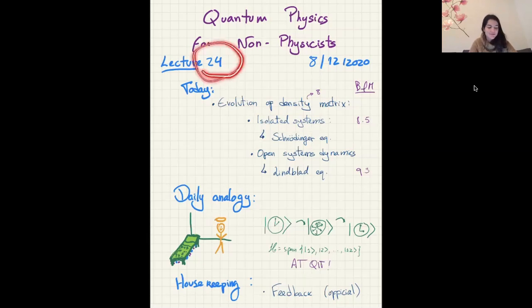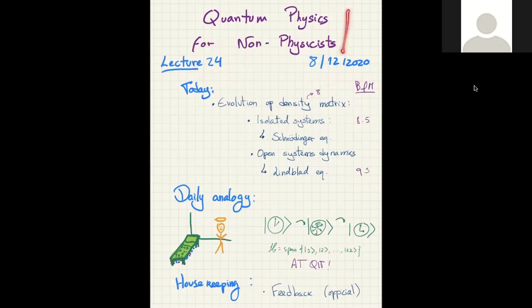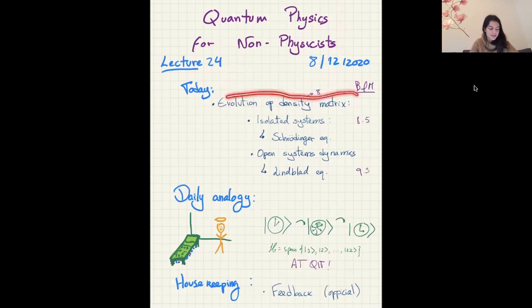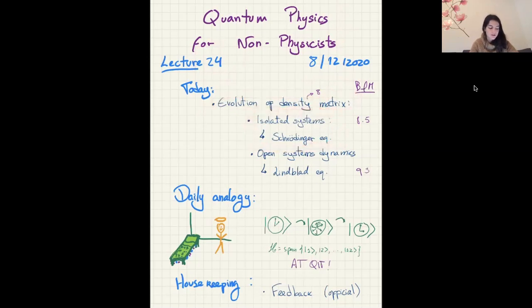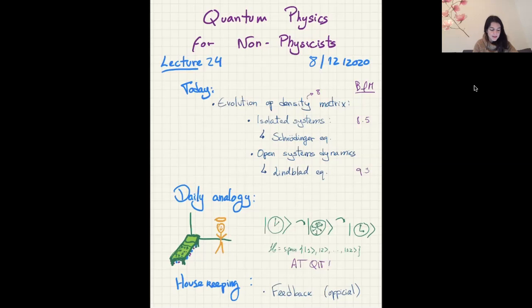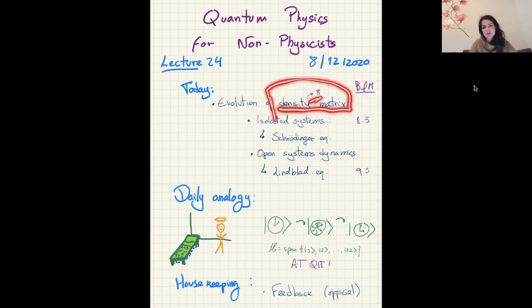Welcome to lecture 24, dated the 8th of December. Today we'll talk about the evolution of the density matrix, both in isolated systems—generalizing the Schrödinger equation for mixed states—and for open systems in contact with some environment. We'll be following the Ben Schumacher and Mike Westmoreland book, specifically sections 8.5 and 9.3.